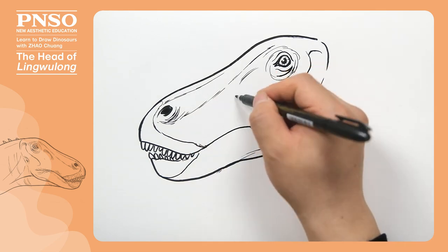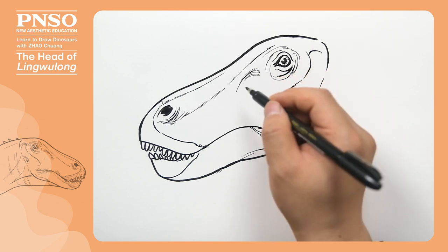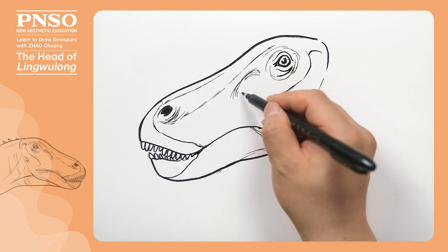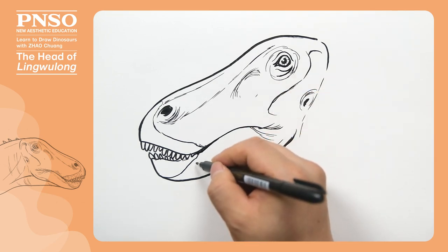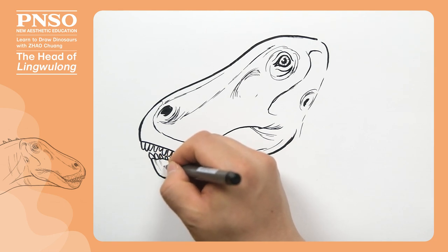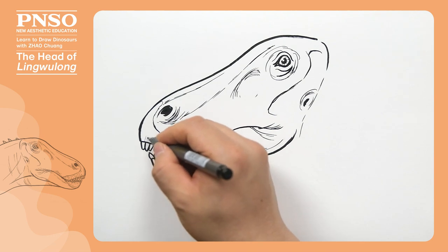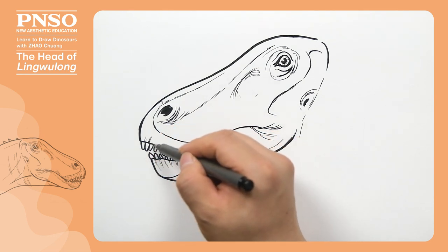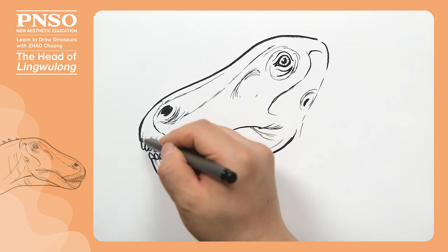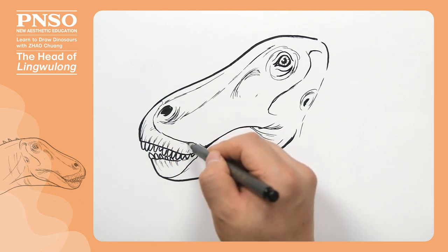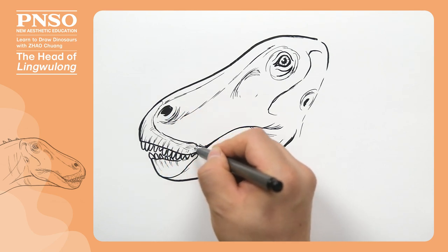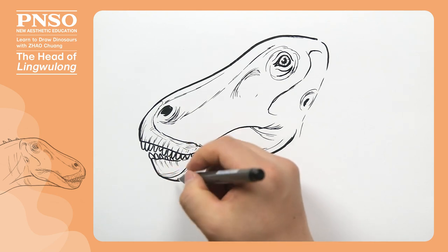Here, we can slightly draw the traces of its ant-orbital fenestra. The ant-orbital fenestra of sauropods had become very small, but there were still some traces of muscles. Now let's add some details — we can draw some traces on its beak. The skull fossil of Lingwilong is not complete, but according to fossils of other sauropods, generally we find that each of its teeth corresponded to a bulge. Therefore, when we restore its beak, we can add such bulges. Along the growth direction of its beak, we can slightly draw some growth marks, especially the part growing out of its skin, to make it look more textured.